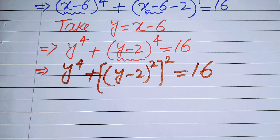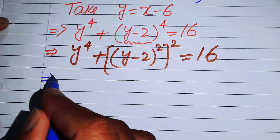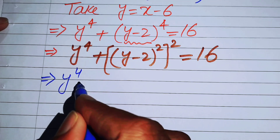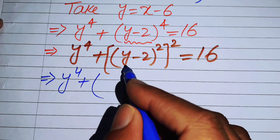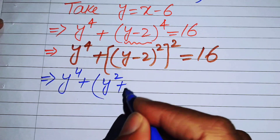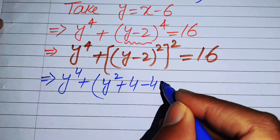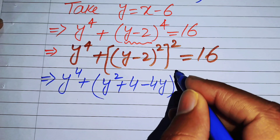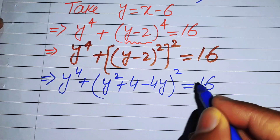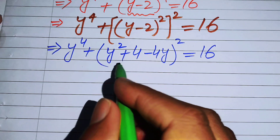In the next step we open one square and use the square identity to get y^4 + (y^2 + 4 - 4y)^2 = 16. Now we apply the square identity under three variables.